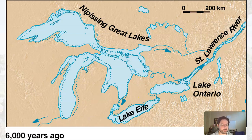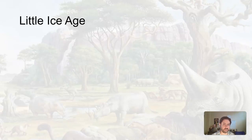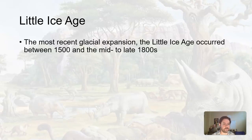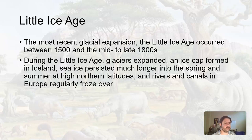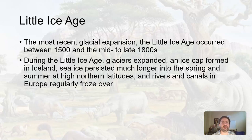One more thing most people have never heard about, besides the larger glaciations during the Ice Age of the Pleistocene, is something called the Little Ice Age. The most recent glacial expansion, called the Little Ice Age, actually occurred about 200 to 500 years ago — between the 1500s and 1800s. During the Little Ice Age, glaciers expanded more so in the northern latitudes, like in Iceland. It didn't really reach deep into North America, but glaciers still expanded in the northern regions of Earth.